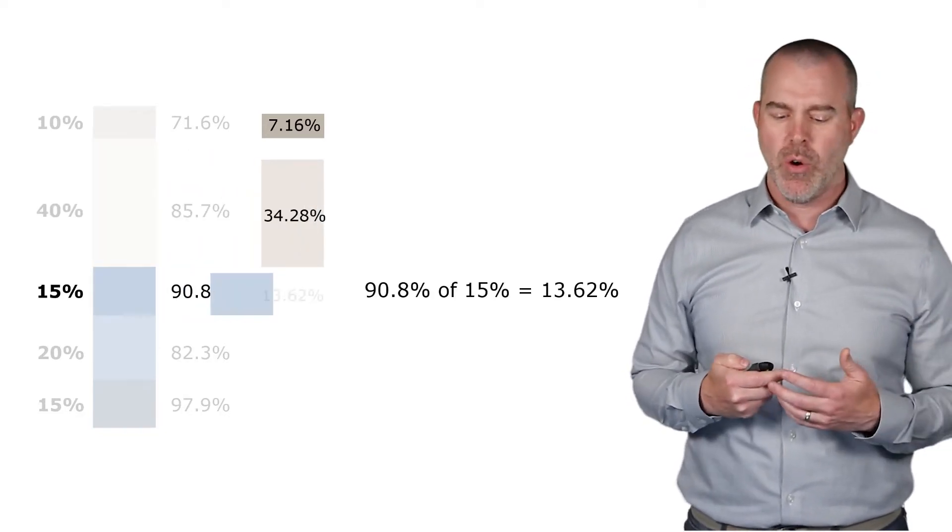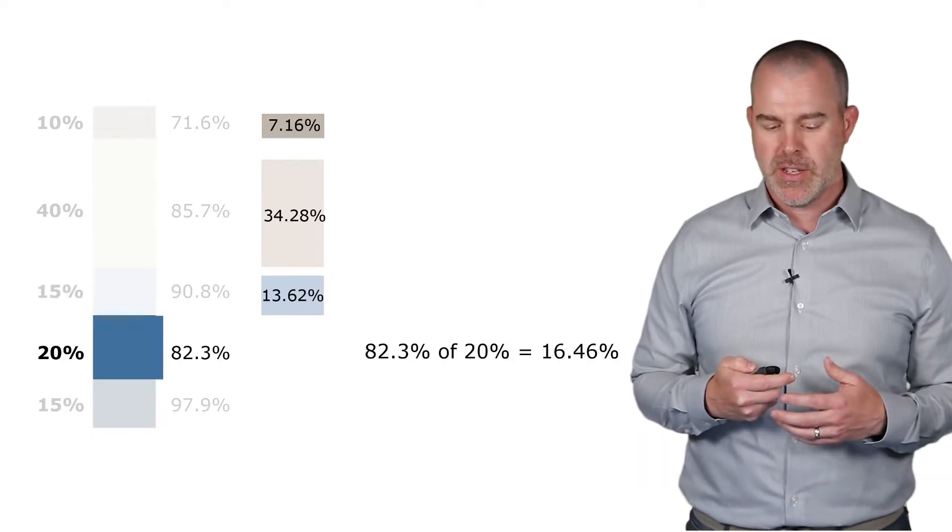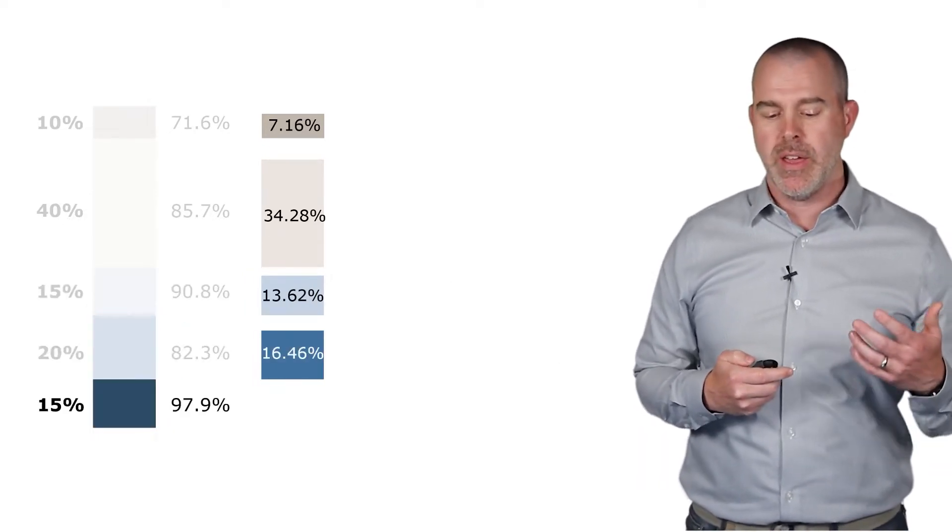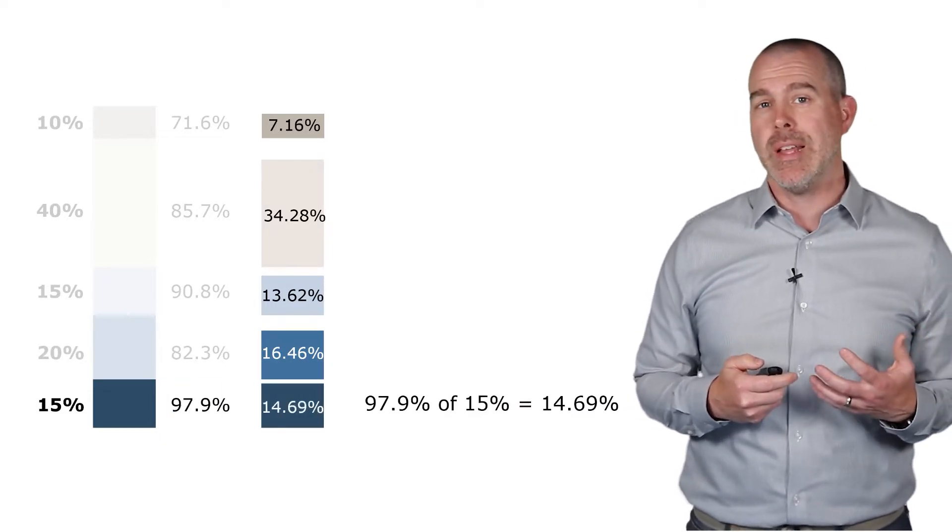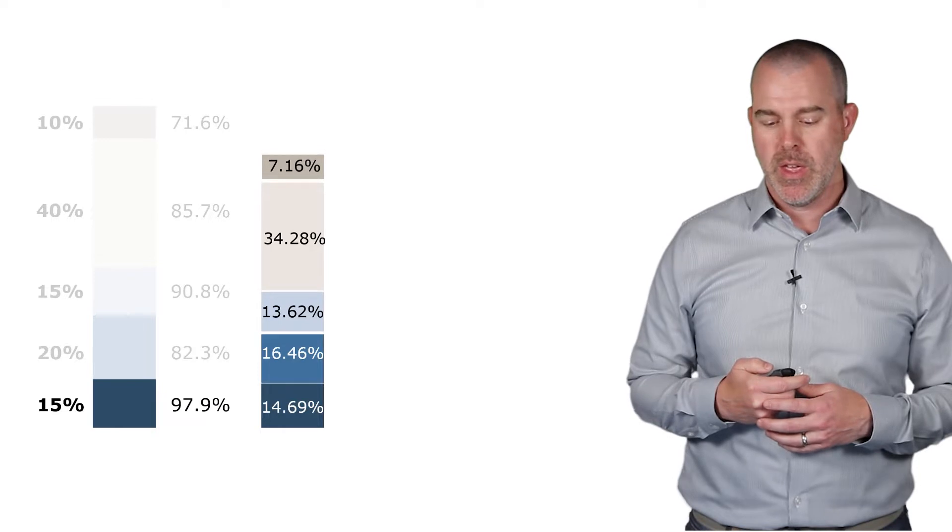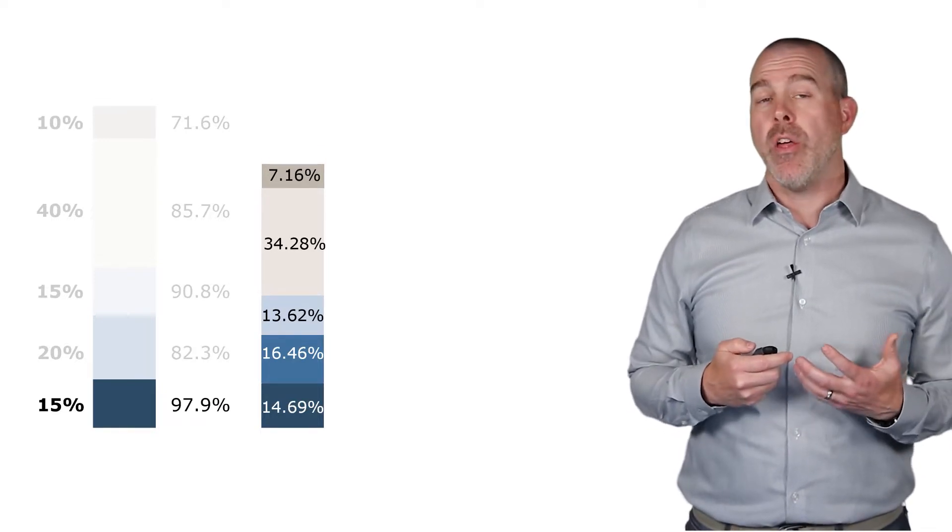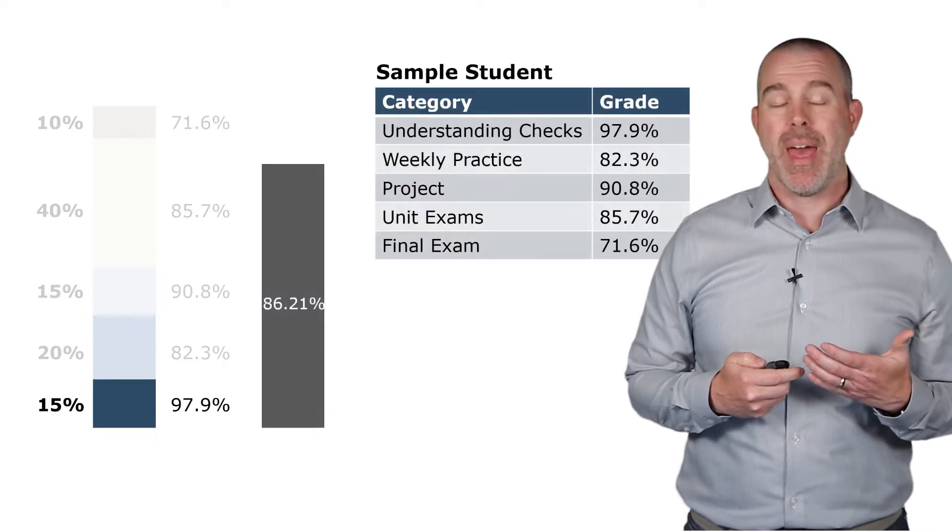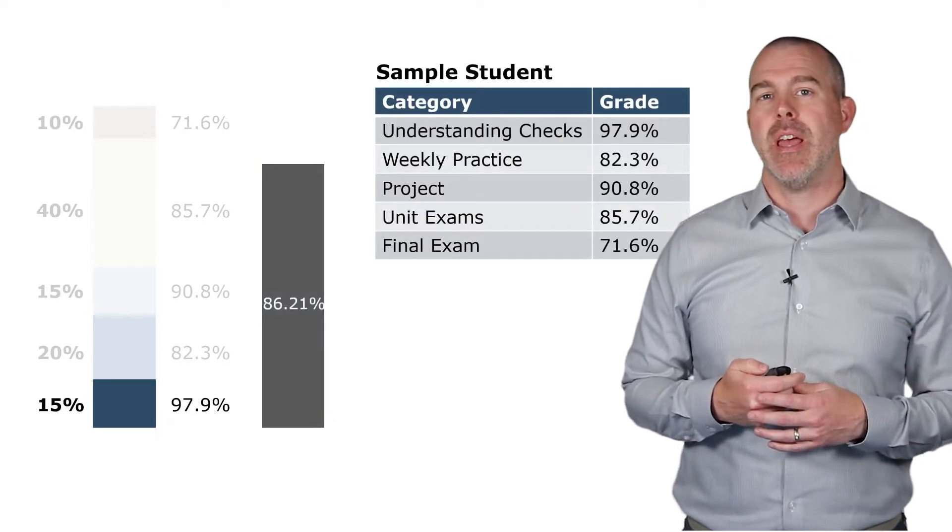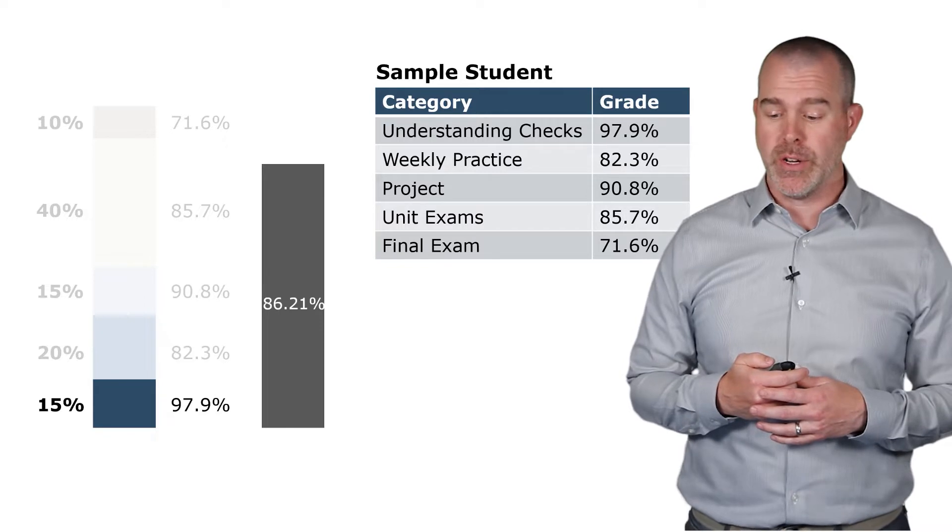Next category, similar idea: 85.7% of the 40% that was on exams, and then etc. For all the other categories we have all their associated weights. Their grades are the 71.6%, 85.7%, etc., and then the weights are the weights in the grading distribution. So when we add all of those now weighted percentages up, that gets 86.21%. That is the student's grade for the course.